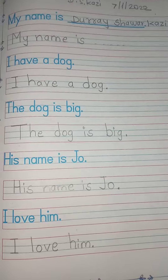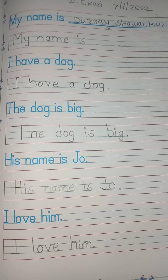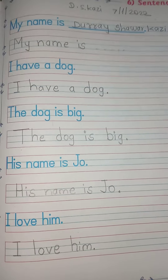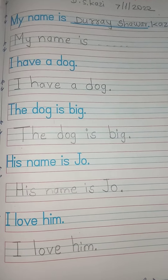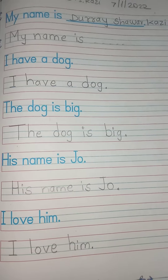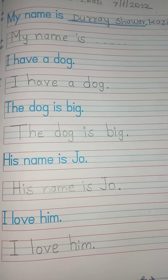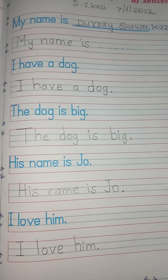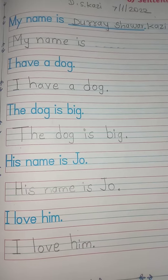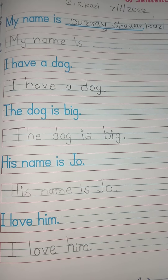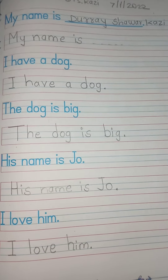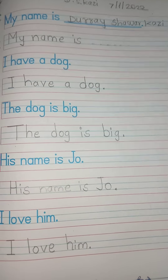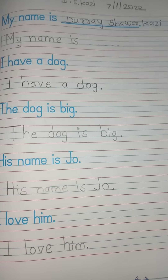Open your letter practicing book, page number 33. Some sentences are given here. You have to write the same sentence here. The first sentence is 'My name is ___'. Here you have to write your own name.